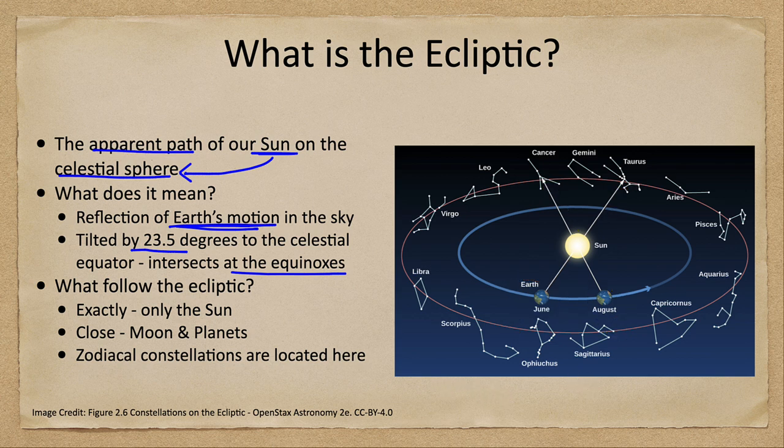So what follows the ecliptic? The only thing that follows it exactly is the Sun. The Sun will always be on the ecliptic because that's how the ecliptic is defined. That is the path of the Sun, so the Sun has to be on the ecliptic. It can't be any place else. Close to that, we will find the Moon and planets and the zodiacal constellations.